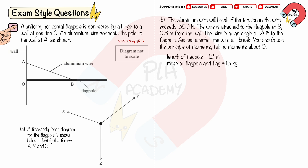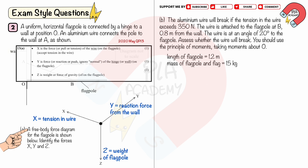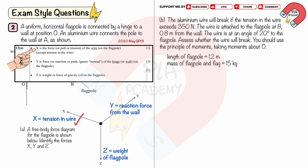Exam Style Question 2: A uniform horizontal flagpole is connected by a hinge to a wall at position O. An aluminium wire connects the pole to the wall at A. A free body force diagram is shown. Identify forces X, Y, and Z. The force X is the tension in the wire. The force Y is the reaction force from the wall or hinge acting on the flagpole. The force Z is the weight of the flagpole. You get three marks for correctly identifying each force.